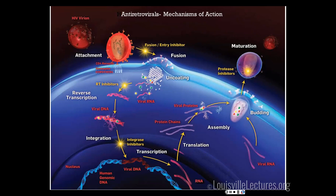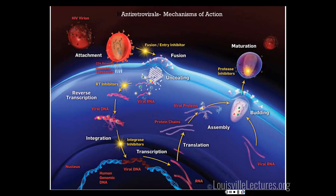Now you're going to have release of that material into the host cell. Here is where your reverse transcriptase is going to work — it's going to help you make DNA from RNA. That's why it's called reverse transcription. This is the point where our NRTIs and NNRTIs work. Once you have viral DNA formed, it has to be integrated into the host DNA. The enzyme that does that is the integrase, and this is where our integrase inhibitors work.